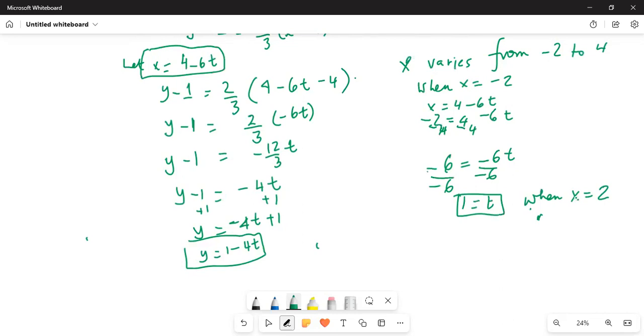When x is 4, we have x equal to 4, x is equal to 4 minus 6t, or 4 is equal to 4 minus 6t. So subtract 4 on both sides.